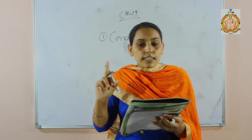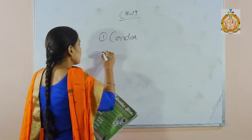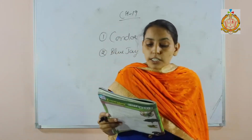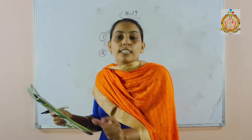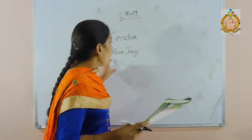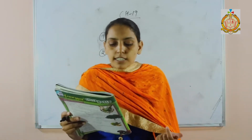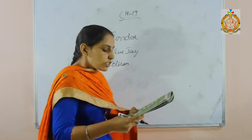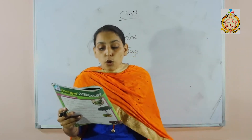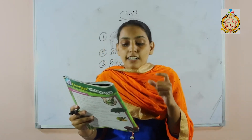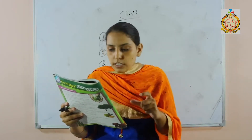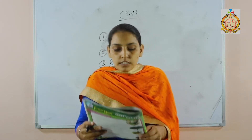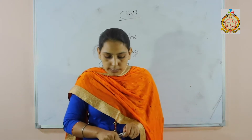Next is the blue jay. It is predominantly blue in color, that's why the name 'blue jay' is given to that bird. Next one is the pelican. It is the largest water bird with the longest beak and the largest throat pouch, used in catching prey. Figures of the birds are given in your book with numbers; the third figure is of the pelican.